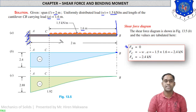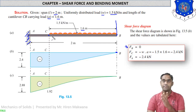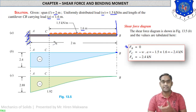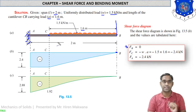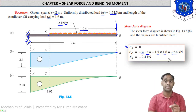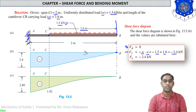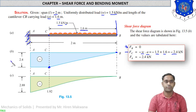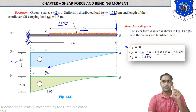At point C, all loads from B to C must be considered. The UDL from B to C acts vertically downward, which is negative. The UDL is 1.5 kN/m acting on 1.6 meters, so 1.5 × 1.6 = 2.4 kN. The unit is kN, not per meter, because per meter is multiplied with the distance. So shear force at C, FC = −2.4 kN, drawn at height 2.4 on the diagram.